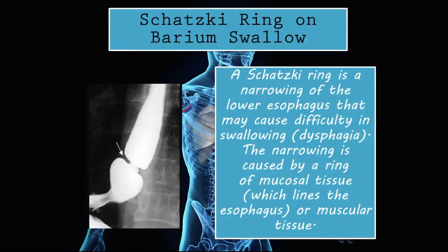Schatzki ring on barium swallow. A Schatzki ring is a narrowing of the lower esophagus that may cause difficulty in swallowing — dysphagia. The narrowing is caused by a ring of mucosal or muscular tissue lining the esophagus. Schatzki rings are usually found in the lower part of the esophagus, which makes it different from other pathologies, and it normally presents as a very clean-cut ring-like image — a very neat circular ring visible on barium swallow.